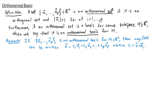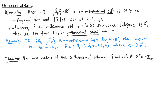Now let's look at one last theorem. An n×n matrix U has orthonormal columns if and only if U^T · U equals the n×n identity matrix. To prove this, let's write out the product U^T · U. In the transpose, the columns become rows, so U^T has rows u1^T, u2^T, through un^T.